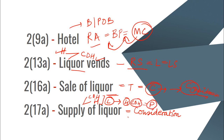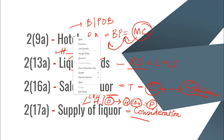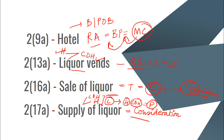So the conditions to remember for supply of liquor are: it must be for consideration; it must be to a hotel or common drinking house; both must have a license; and the license must be for consuming within their premises.